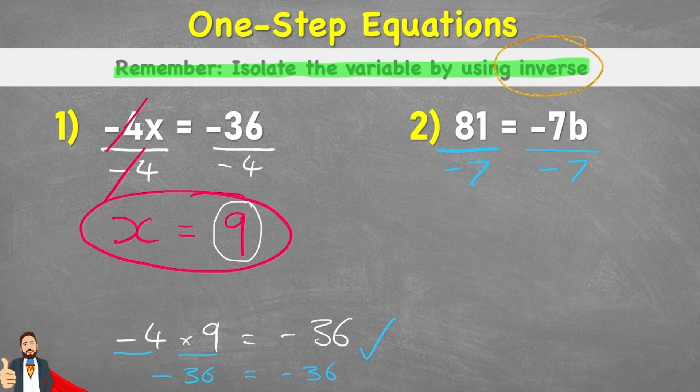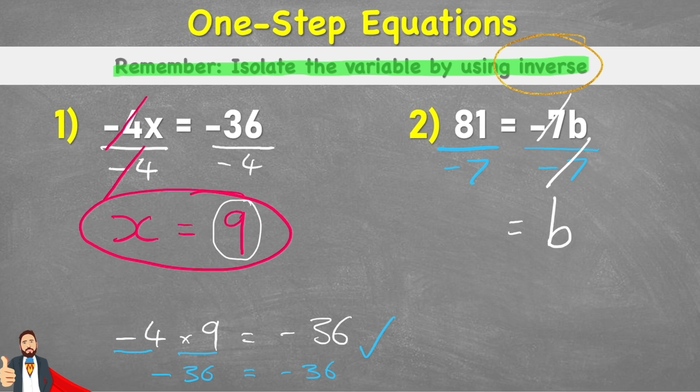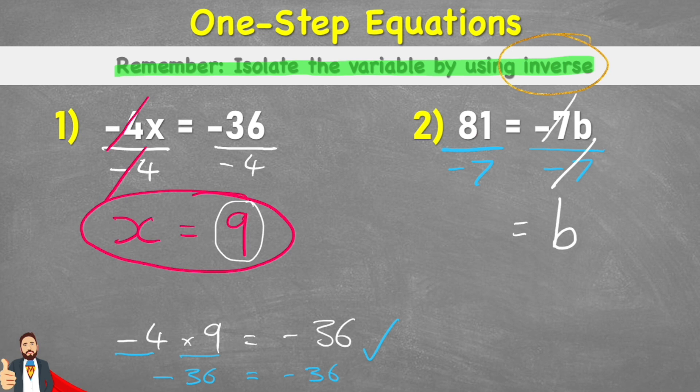Let's look at the right-hand side first of all. Well, the multiply by negative 7 and the divide by negative 7 cancel each other out, leaving with just b. Now I can look at the left-hand side. And when we're dividing a positive number by a negative, we would still get a negative. So in this case, 81 divided by negative 7 equals negative 11.5. But like we said, it's negative. So we have negative 11.5. So my answer is negative 11.5 equals b. Or to write it with a variable at the start, b equals negative 11.5.